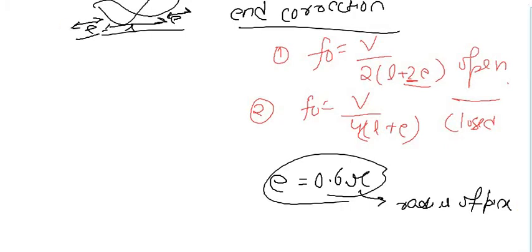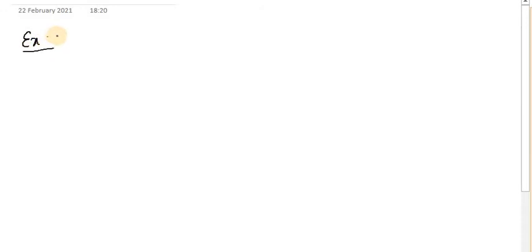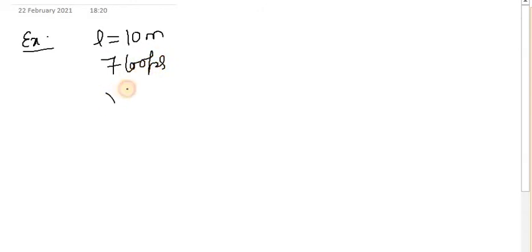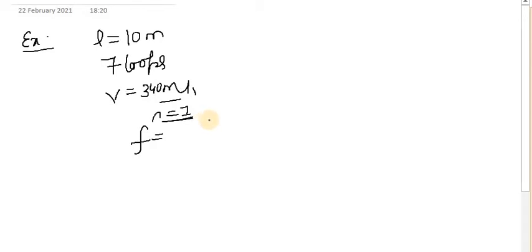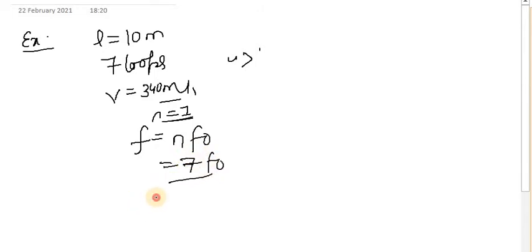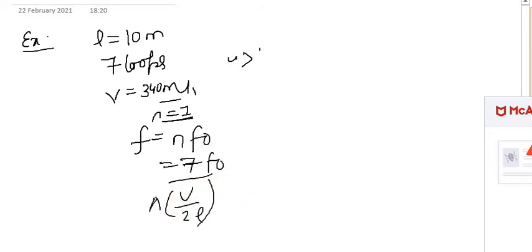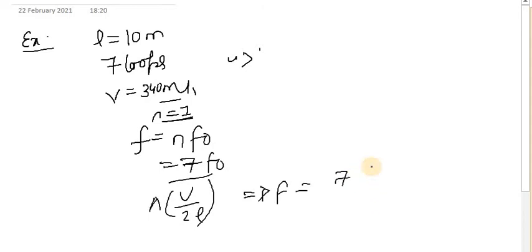Question: An organ pipe of length 10 meters has a standing wave making seven loops. If the velocity of sound is 340 m/s, find the frequency. For an open pipe, f = n·f₀ = 7 × (v/2L) = 7 × (340 / 2×10) = 7 × 17 = 119 Hz.